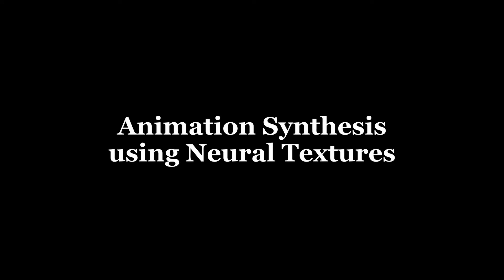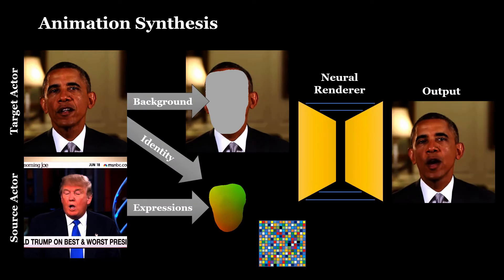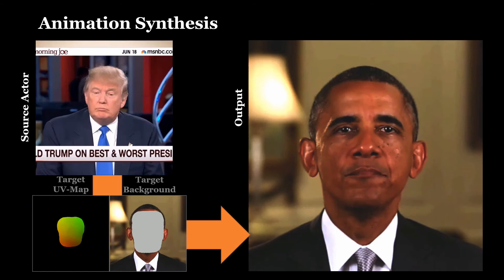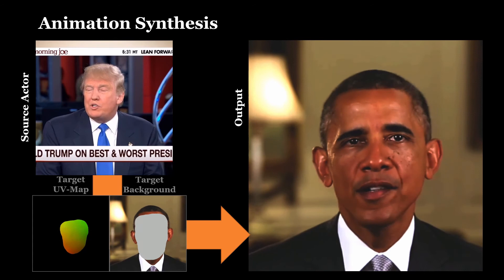Neural textures are a powerful tool which can also enable animation synthesis. To this end, we demonstrate facial reenactment. Given a source and a target actor, we reconstruct the facial geometry and transfer the expressions from the source to the target mesh. The modified UV map, as well as a background image from the target video, is used as input to our rendering approach. Here you can see examples of reenactment sequences powered by neural textures.